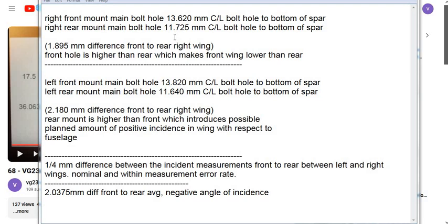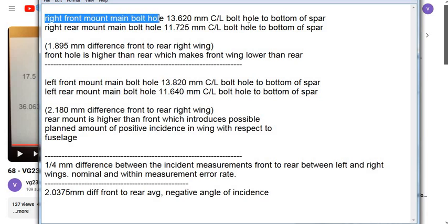The manner in which I measured a month ago was prone to huge errors. So when we look at the new measurements, this will be the right front mount main bolt hole to the bottom of the spar. The center line of the bolt hole is 13.620 millimeters, so 13.6 millimeters.